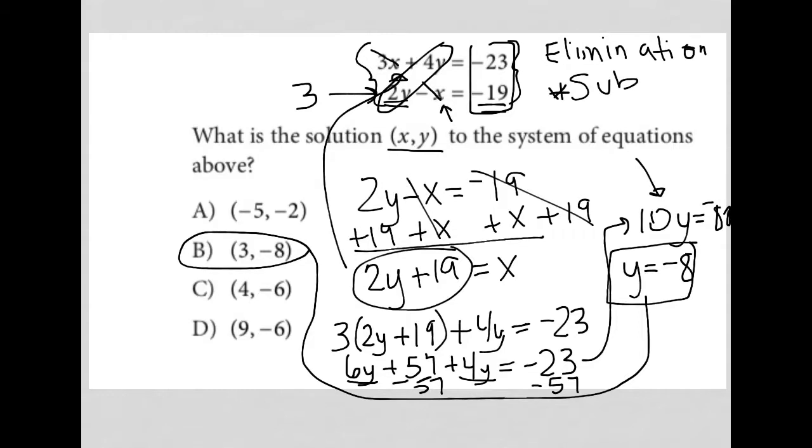Also there is another option here that I want to point your attention to and that is the fact that all of these answer choices are (x,y) values which means we can plug them in to see which work. That means I could plug in x equals negative 5 and y equals negative 2 into both equations and if that works then that would make that answer choice a good one.